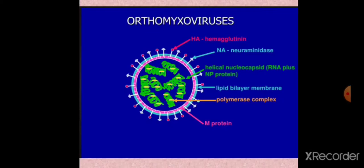On the genome, protein complexes are also present: NP protein (nucleoprotein) is associated with the single-stranded segmented RNA. In yellow, you can see the NP proteins and nucleoprotein. The nucleocapsid is helical in symmetry, a lipid bilayer membrane is present, and polymerase complexes are there — this is the structure of orthomyxoviruses.